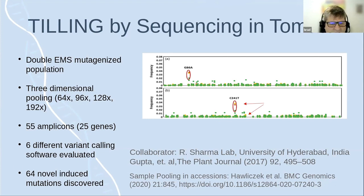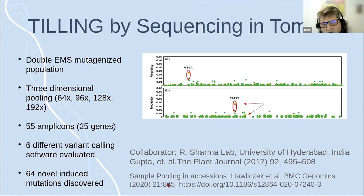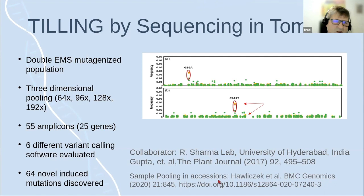We tend to use pools of three nowadays; Prateek used six. A more recent paper looks at pools of 96, examining natural accessions in rye, showing you can use this approach to mine germplasm collections of natural variants even if you're not interested in induced mutations.